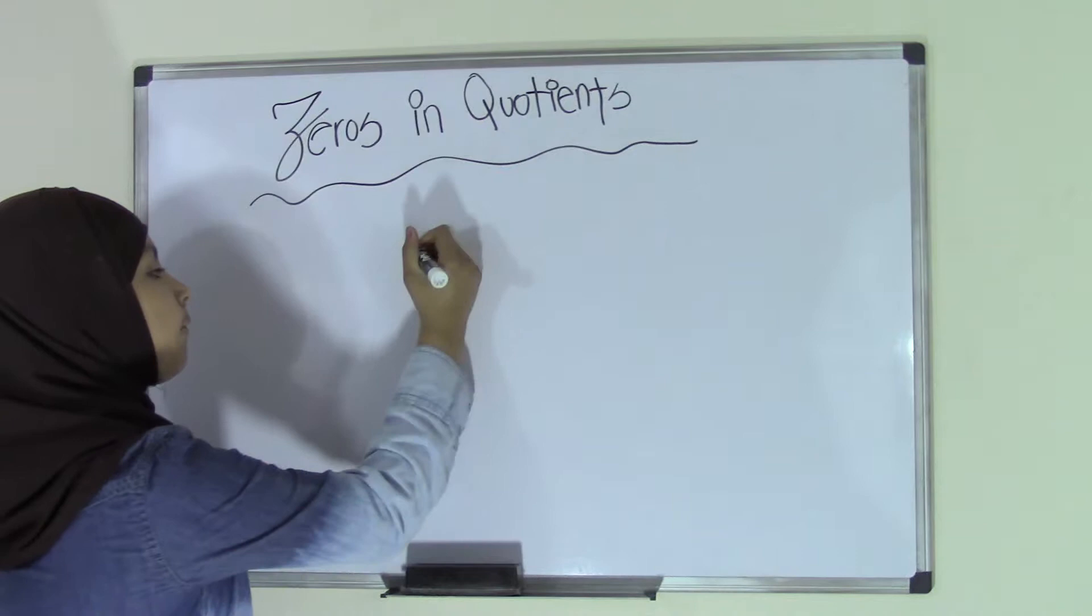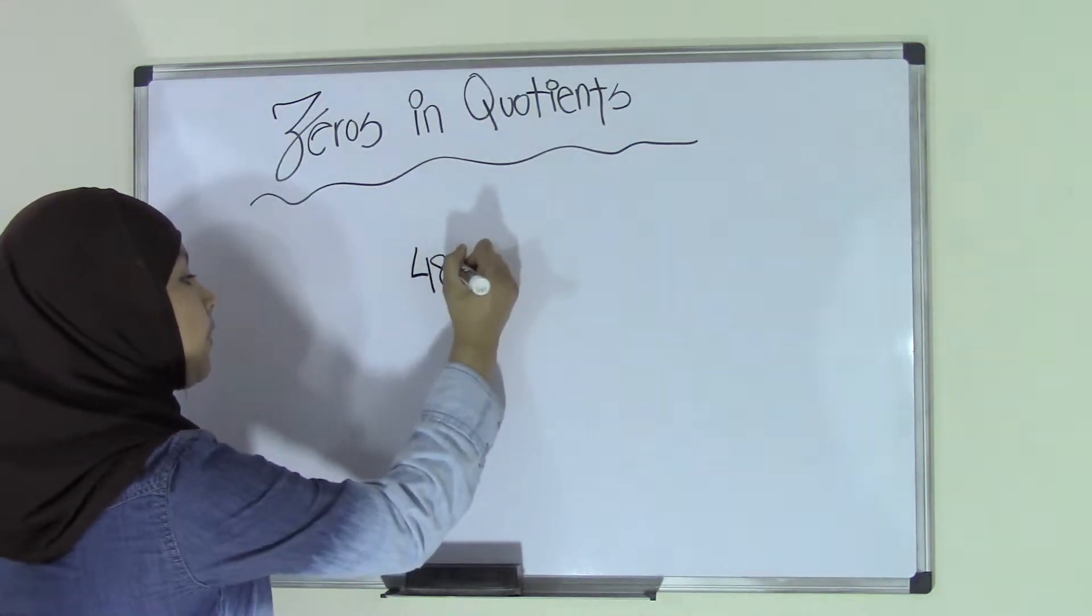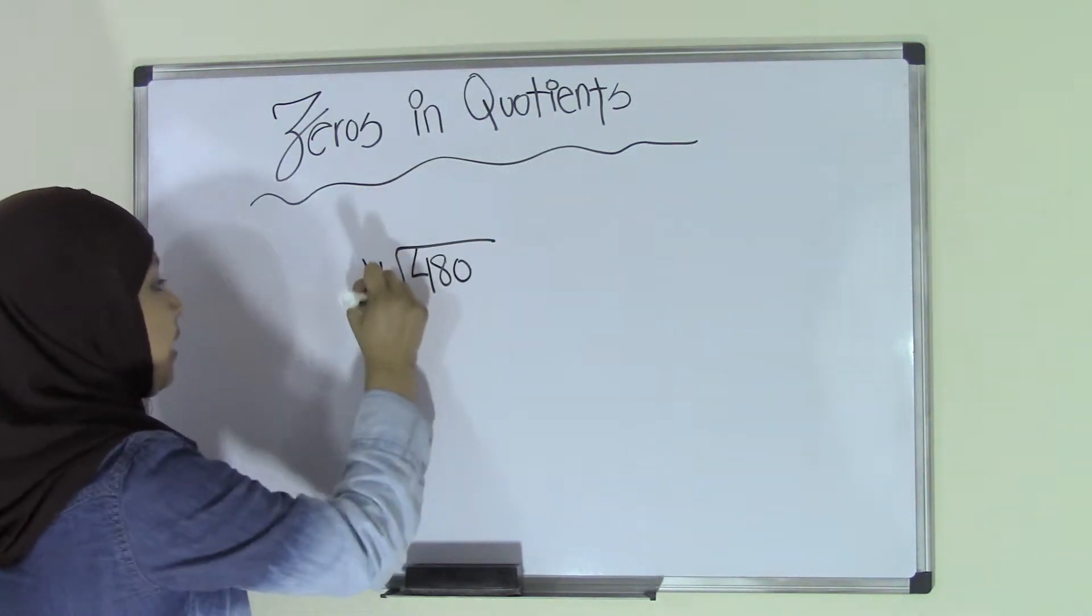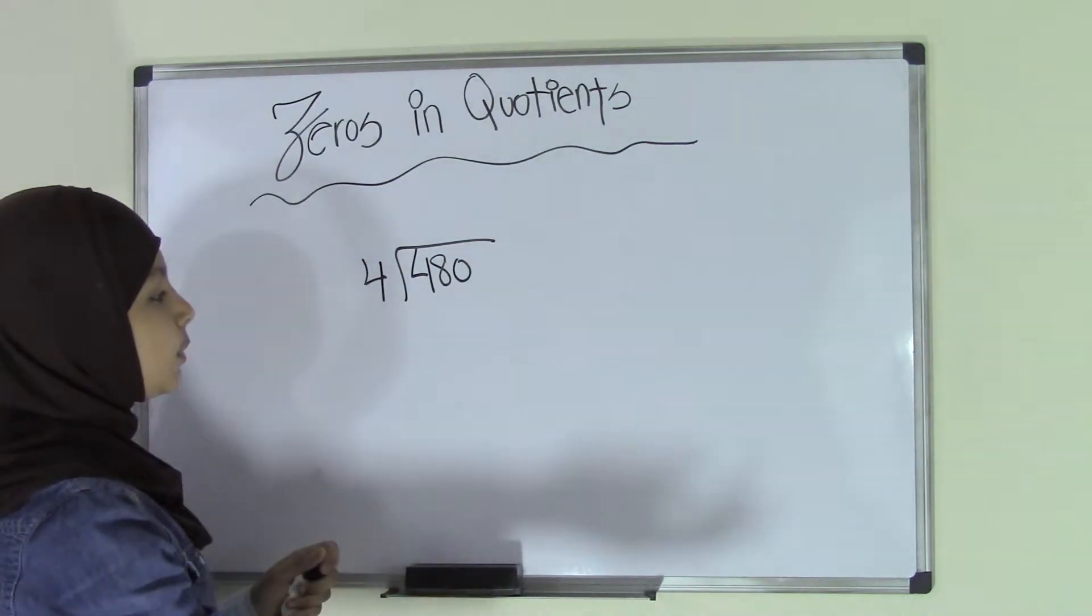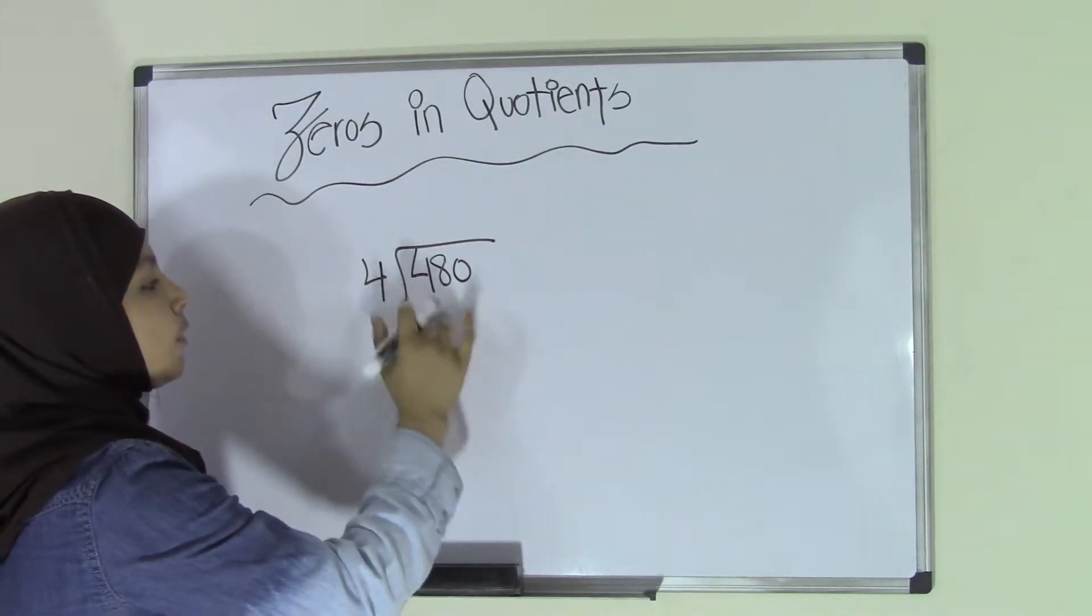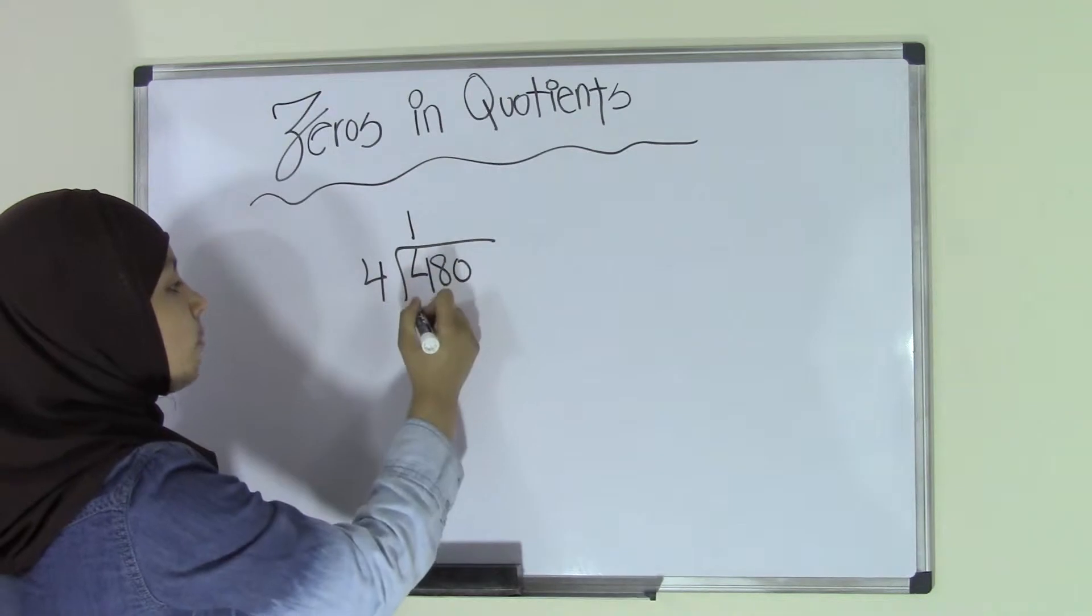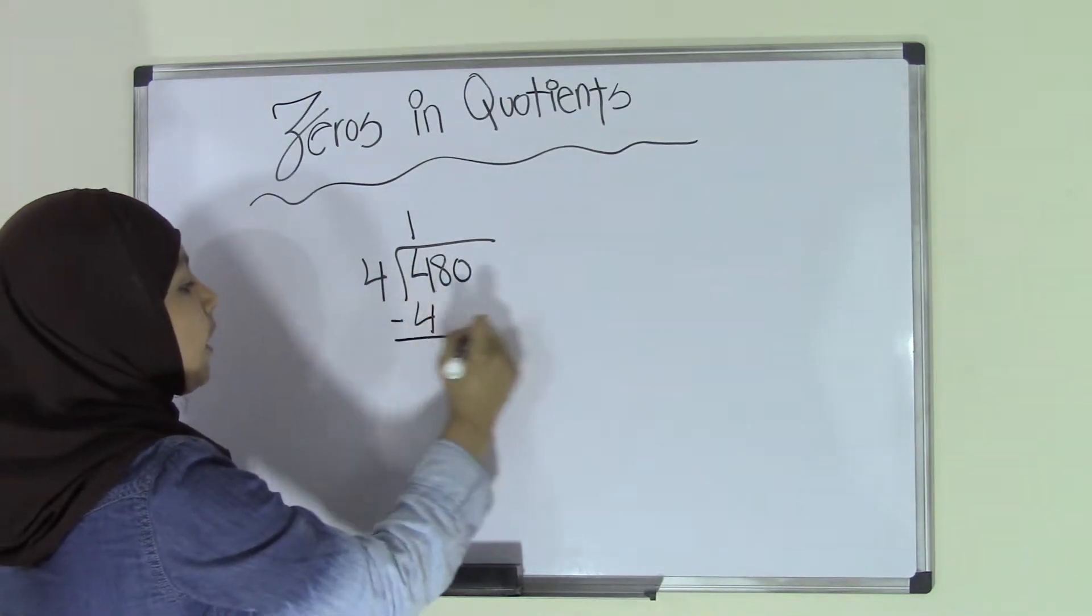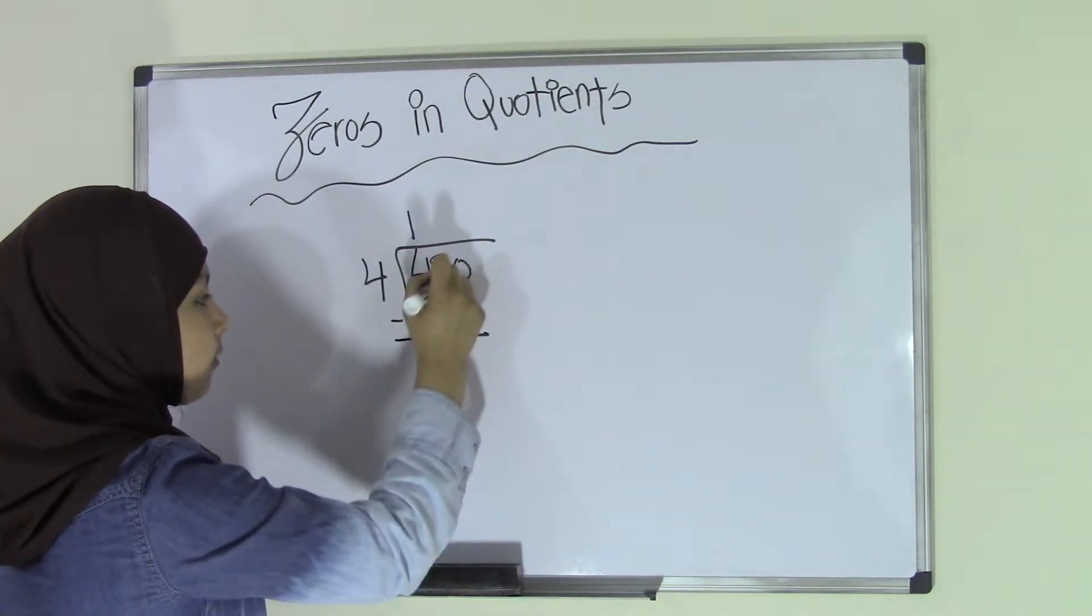So if we have 480 divided by 4, first thing we're going to do is simple division. So 4 goes into 4 one time, so 4 times 1 is 4. Then this will become 4 minus 4 is 0. We bring down the 8.